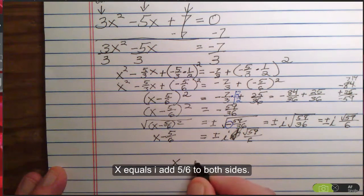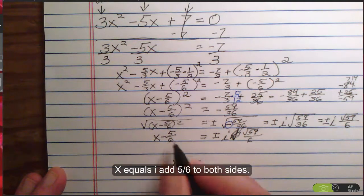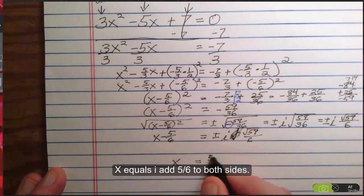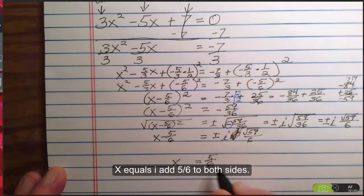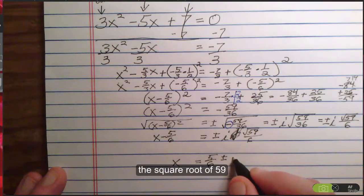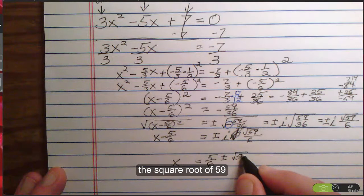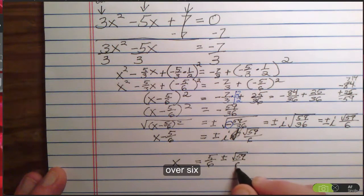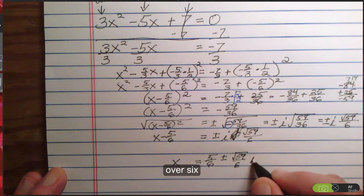x equals, I add 5/6 to both sides, here it is, 5/6 plus or minus the square root of 59/6, i.